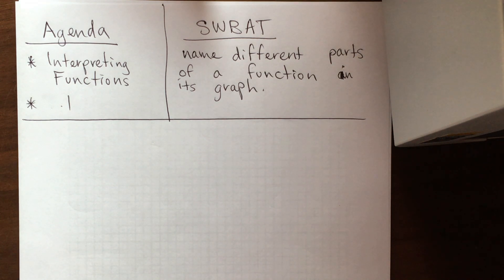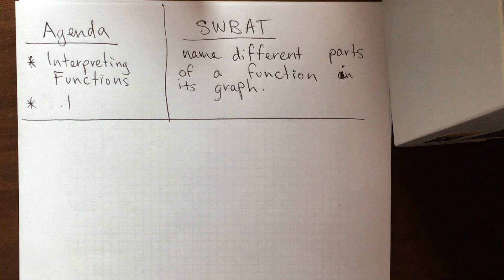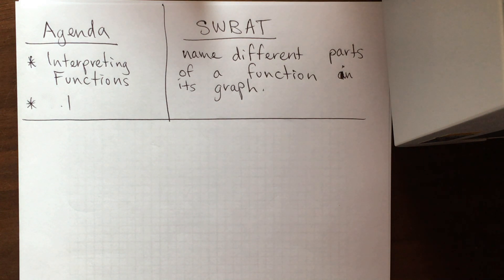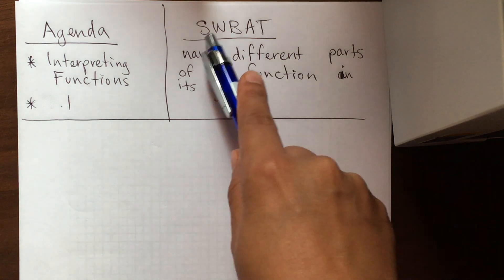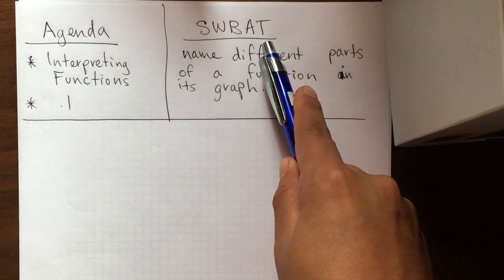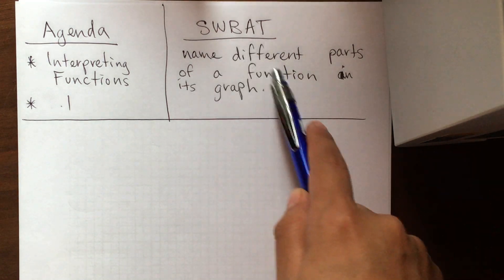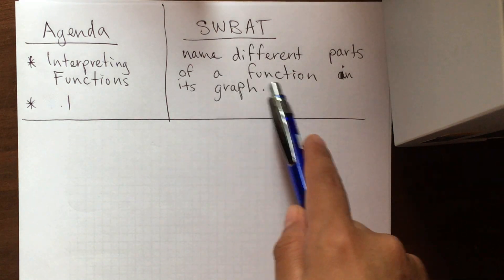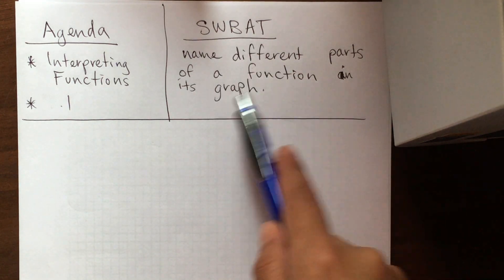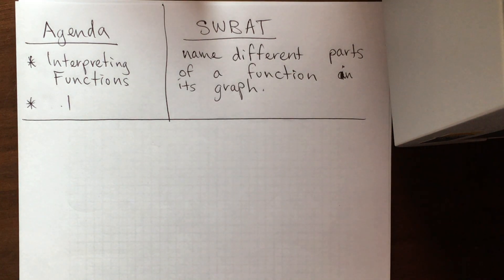Hello students, today's agenda is to interpret functions and we're going to be working on 7.1. Today students will be able to name different parts of a function in its graph.